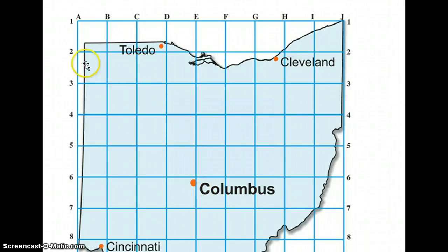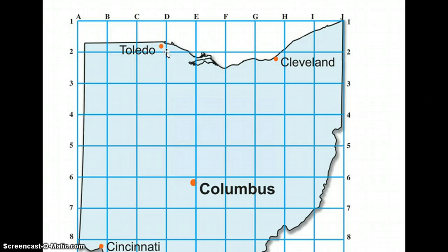Likewise, if we were to go to line 2 and line D, we would find Toledo. Grids help us section off maps into neat parts.